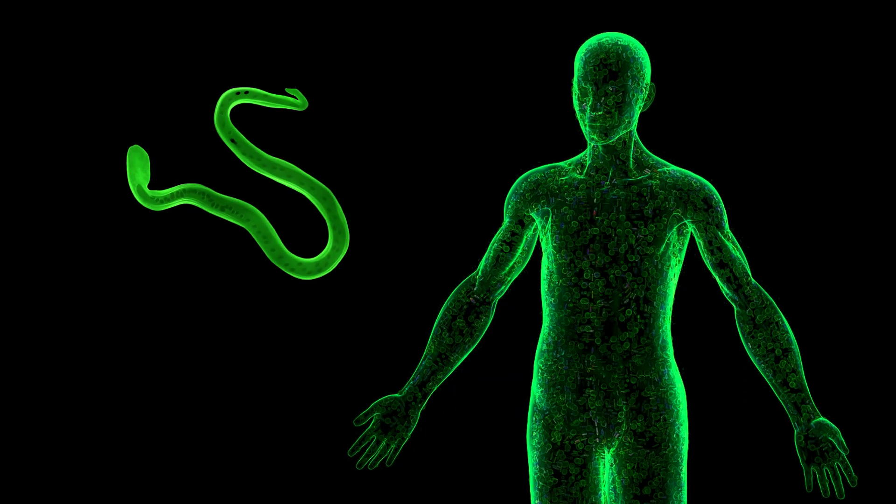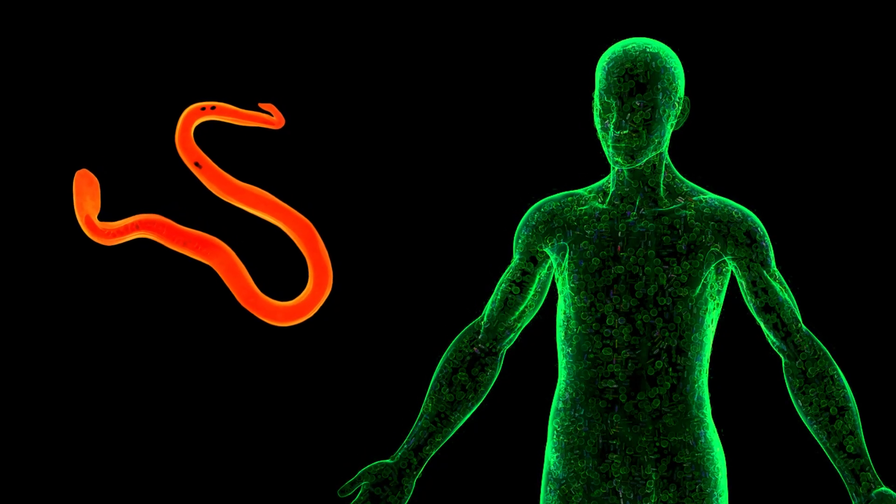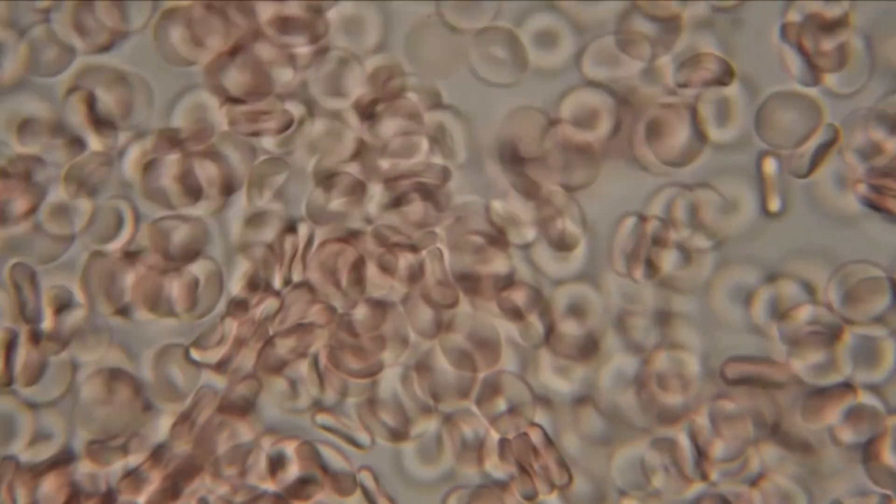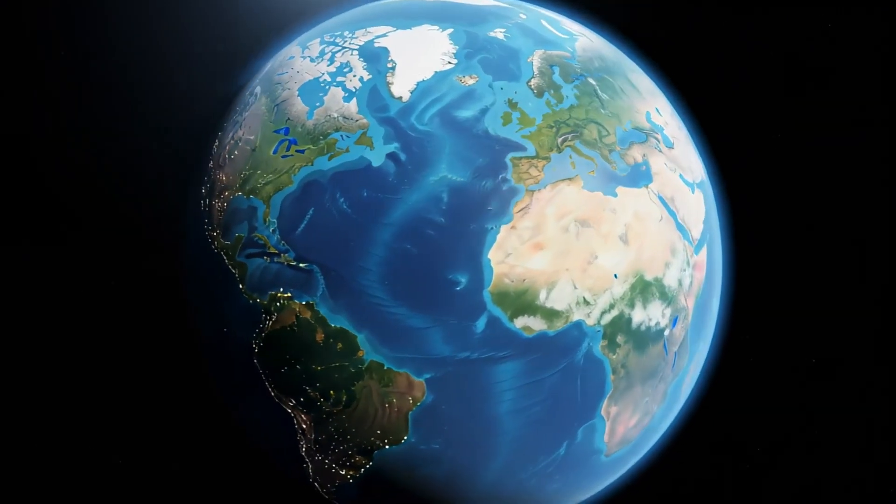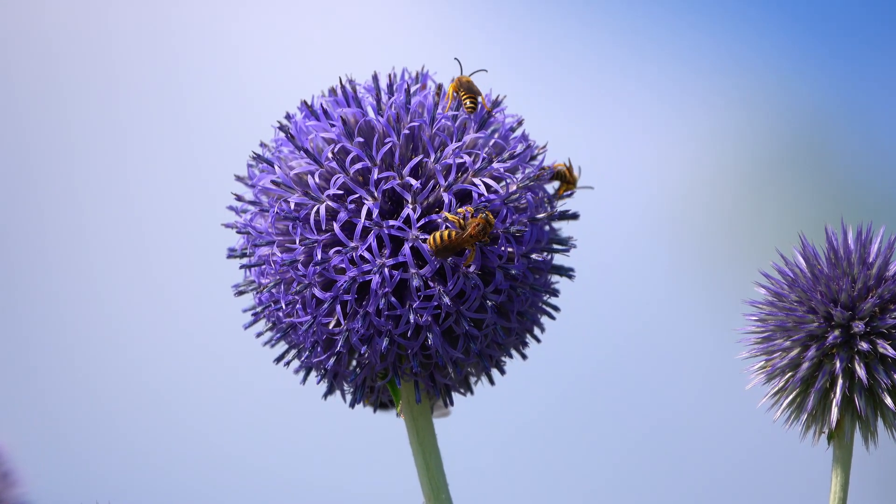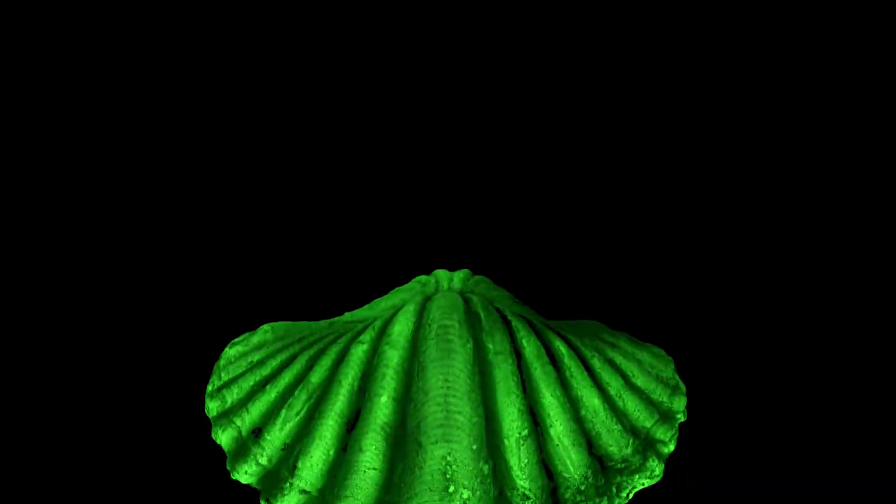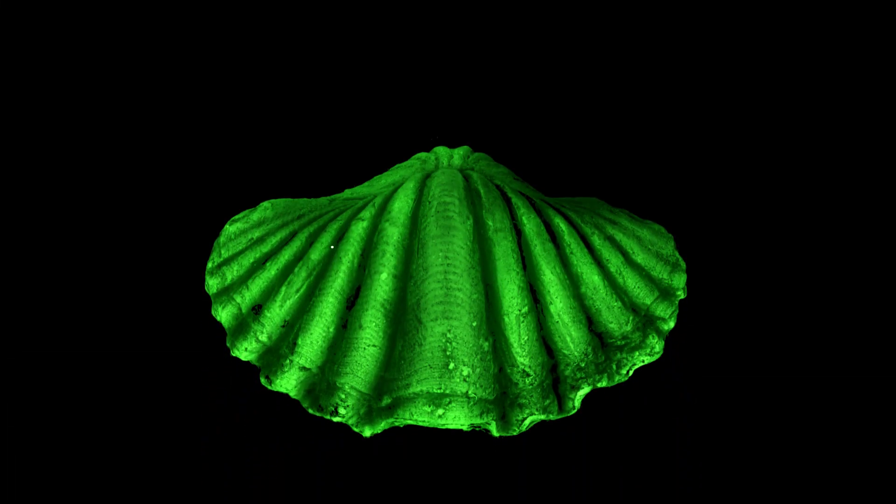But once parasites learned how to live inside other cells, they realized they could do much more, or much worse, per se. By 515 million years ago, parasites had already built weapons so advanced that they could control the host without even being noticed. In the fossil layers from Cambrian oceans, researchers found shells that looked damaged in strange ways.